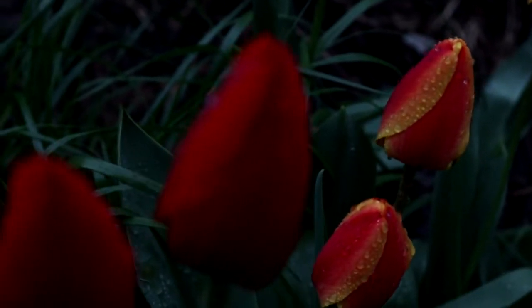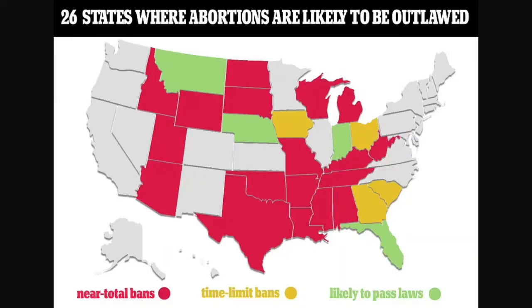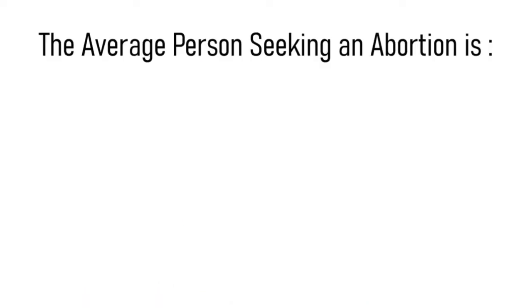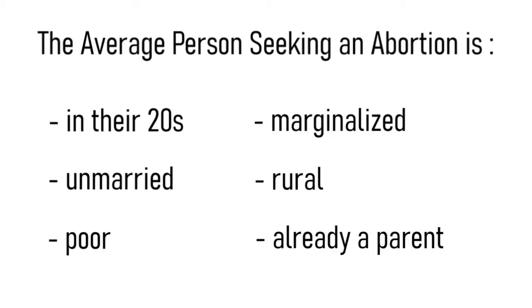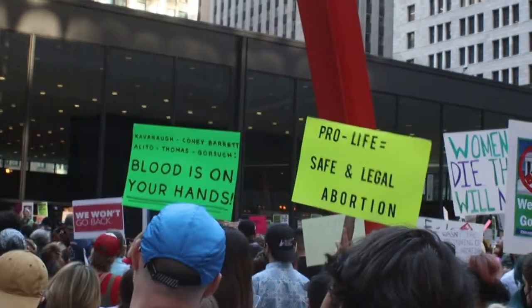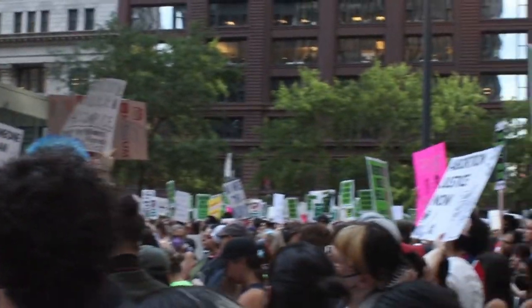The right has been working on this for a long time. Thirteen states have trigger laws that come into effect as soon as Roe v. Wade is overturned. One of these trigger laws in Wisconsin is from 1849 and will immediately ban abortions. Over time, probably 26 out of our 50 states will ban abortion. The average person seeking an abortion is only in their 20s, unmarried, poor, from a marginalized group, rural, and probably already has a child. If someone already has a child and they don't want to have another one — and they know what having a child is like — why make them have another one? A woman getting an abortion does not mean she's never going to have a baby; she just can't support one right now, and she knows that.